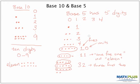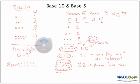So base five is a little tricky. We're not allowed to use any digit greater than four, so we have access to the digits zero, one, two, three, and four. And our columns are different: it uses a fives column and a units column instead of a tens column and a units column.